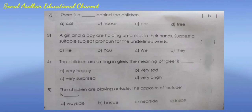Question 3: A girl and a boy are holding umbrellas in their hands. Suggest a suitable subject pronoun for the underlined words. The correct answer is option D - They. Question 4: The children are smiling in glee. The meaning of 'glee' is blank. Options: A) very happy  B) very sad  C) very surprised  D) very angry. The correct answer is option A - very happy.